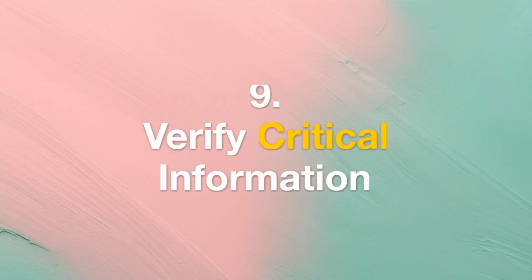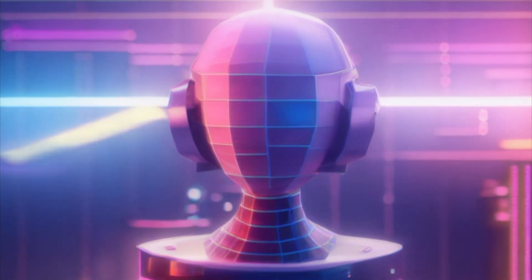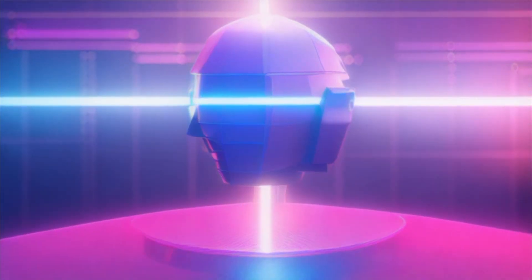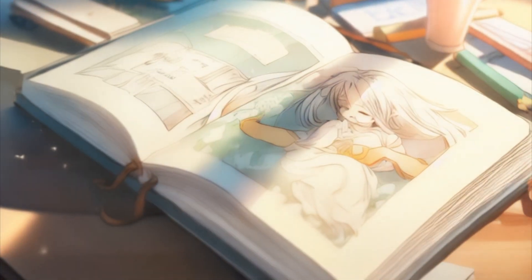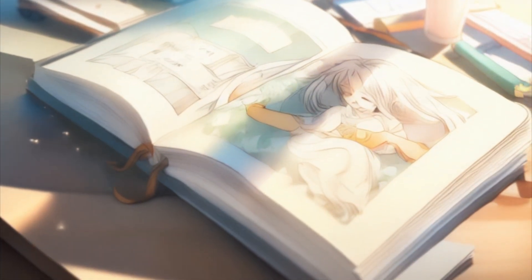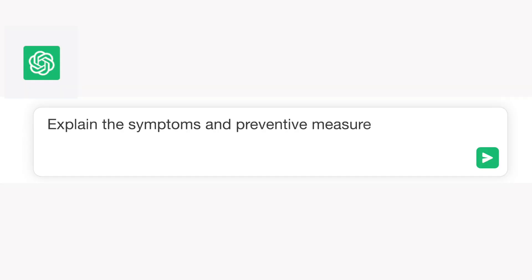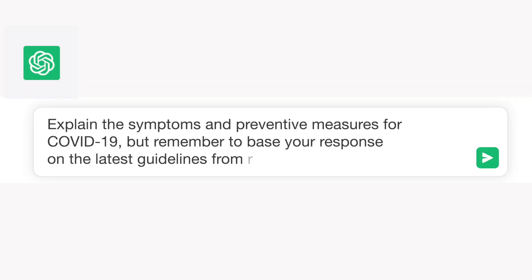Tip 9: Verify Critical Information. While ChatGPT is a valuable resource, verify important information from reliable sources, especially in contexts involving facts, medical advice, or legal matters. Example: "Explain the symptoms and preventive measures for COVID-19, but remember to base your response on the latest guidelines from reputable health organizations."